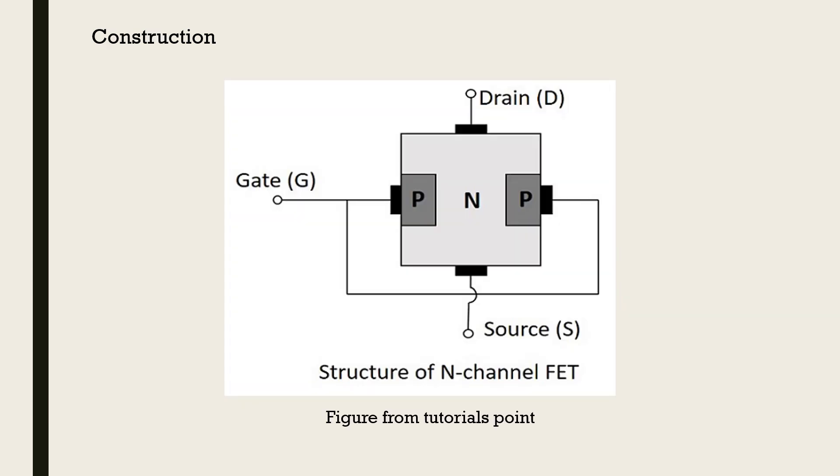Construction. The figure shows the structure of a N-channel J-FET. As it is N-channel, the main current path will be the N-substrate. Thus two P-substrates are diffused into the N-substrate on either sides. The two P-substrates are shorted together using metallic contacts and it is the gate terminal. The drain and source terminals are connected as shown in the figure. That's pretty much all there is to the construction of J-FET. And now we shall move on and look at how J-FETs work.